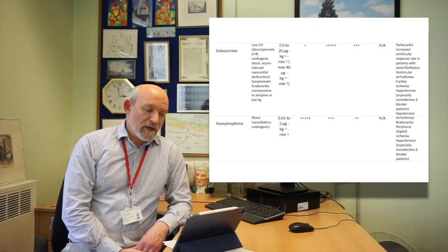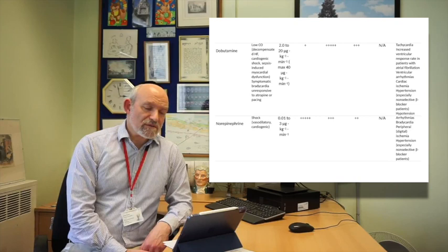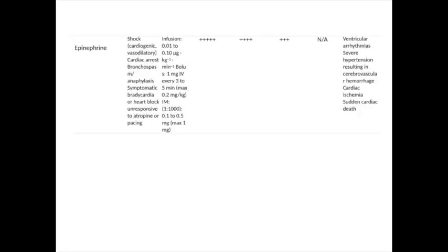The next drug commonly used is that of noradrenaline, also known as norepinephrine, particularly of value in redistributive shock to tighten up the periphery. It is particularly effective on alpha receptors, and to a slightly lesser extent, beta-1 receptors. Side effects again include arrhythmia and bradycardia, and peripheral ischaemia in conditions where blood flow in limbs is critically compromised.